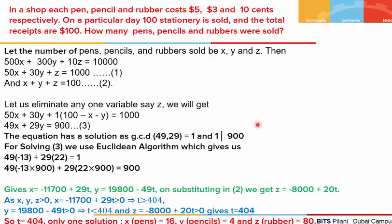Let's look at another question. In a shop, each pen, pencil and rubber costs $5, $3 and 10 cents respectively. On a particular day, 100 stationery items were sold and the total receipts were $100. We have to find how many pens, pencils and rubbers were sold. We assume the number of pens, pencils and rubbers sold to be x, y and z. Converting to cents: 500x + 300y + 10z = 10000. Dividing by 10: 50x + 30y + z = 1000.